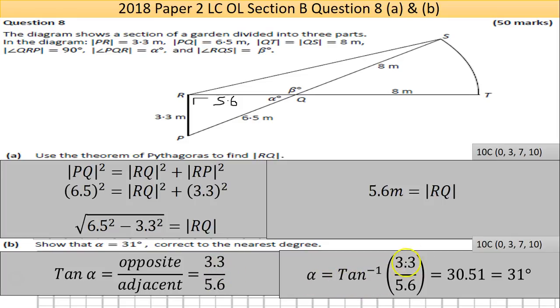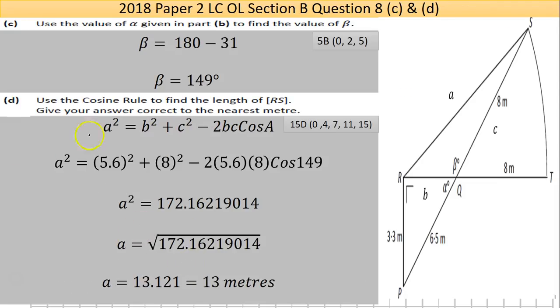The angle equals the inverse tan of that number. Put it to the calculator, I came up with 30.51, rounded to the nearest degree is 31 degrees.